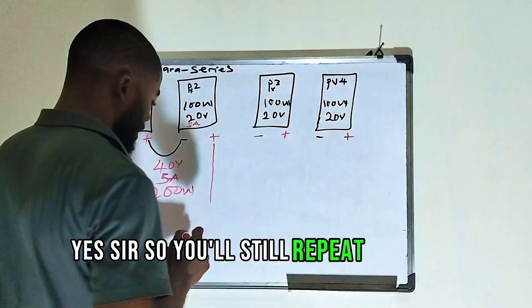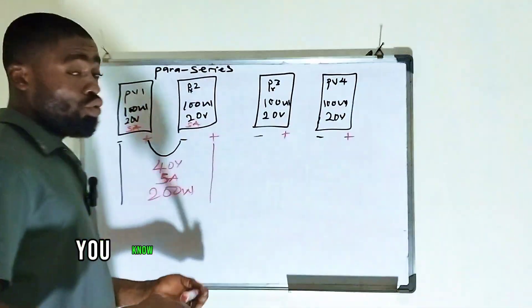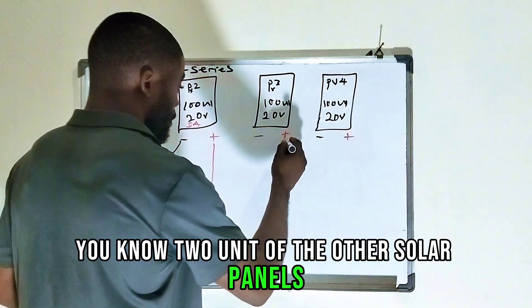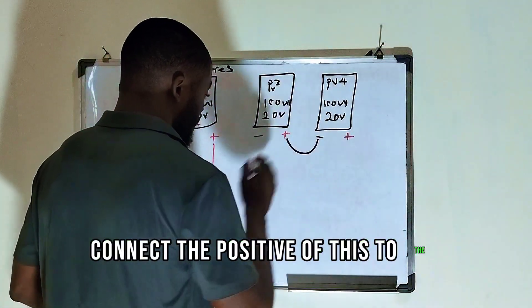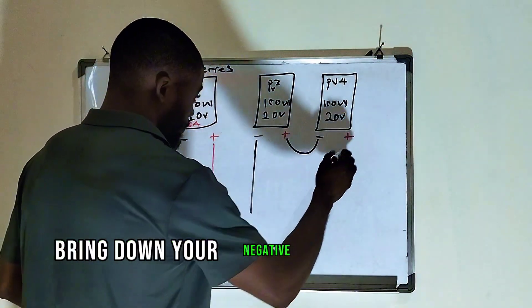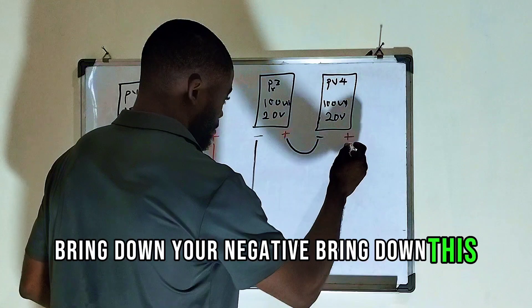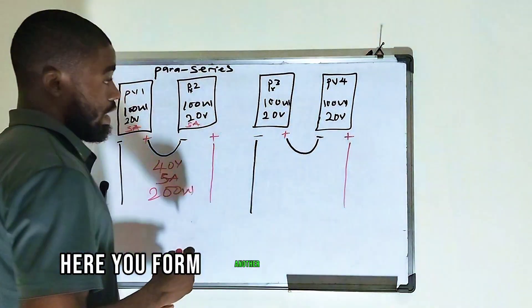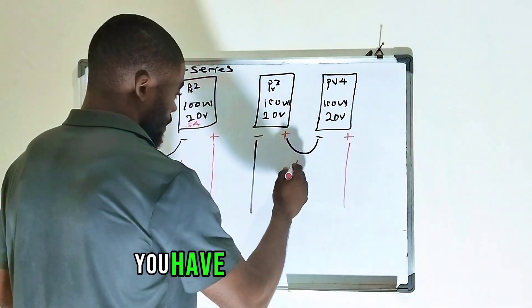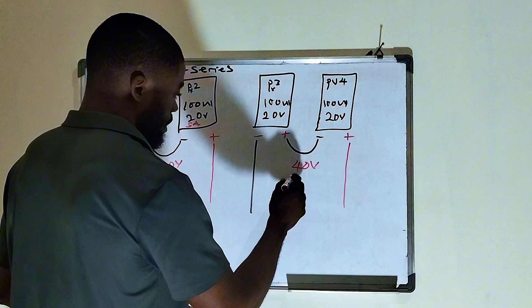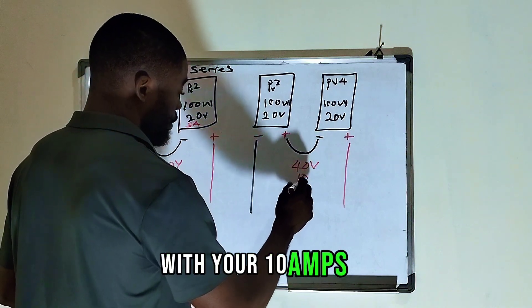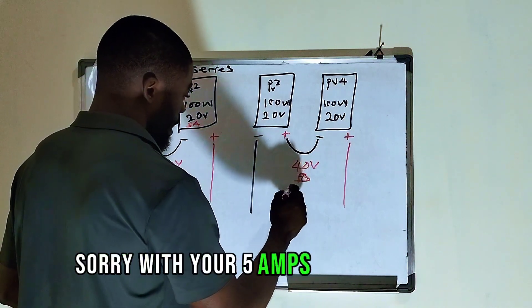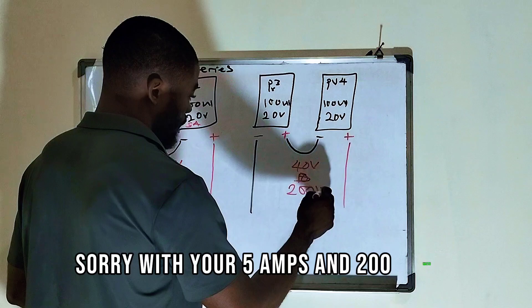So you still repeat the same thing with the two units of the other solar panels. Connect the positive of this to the negative of this. Bring down your negative, bring down this positive. Here you form another Series connection. You have another 40-volt with your 5-amps and 200-watt.